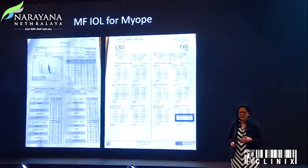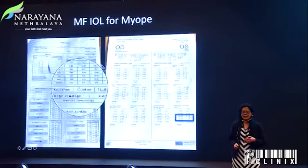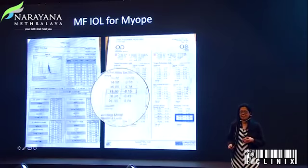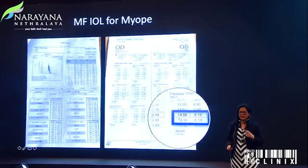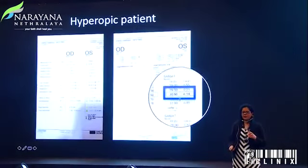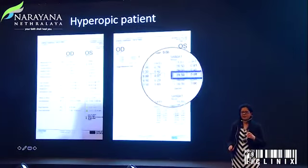If I have my A-scan done well with immersion technique and my Lenstar here, and I'm choosing to do a PanOptix trifocal, Barrett's is giving me this power. I'm not so off with Holladay and SRK/T either. For hyperopic patients, I'm choosing Barrett and Hoffer-Q and getting pretty similar, decent results.